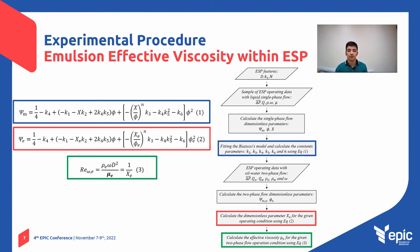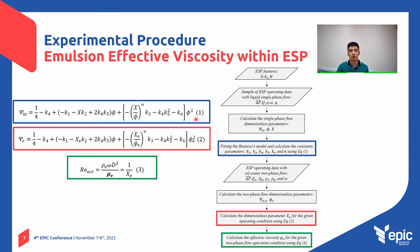Here is the flow chart corresponding to the calculation of the effective viscosity of the oil-water emulsion. Tests with single and two-phase flow were carried out for two different ESP models. Equation 1 was obtained from the performance data of ESP single-phase flows. Thereafter, equation 2 was used to obtain the rotational Reynolds number by equation 3. Finally, the effective viscosity of the emulsions was determined using equation 3.